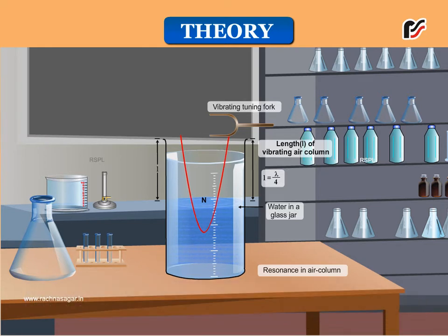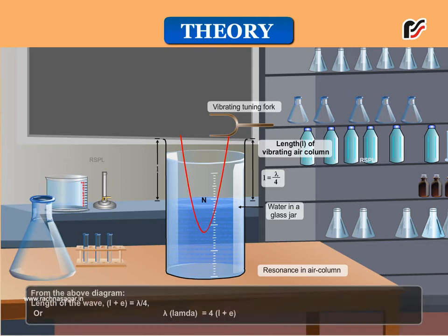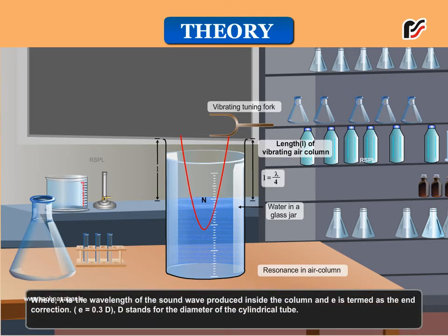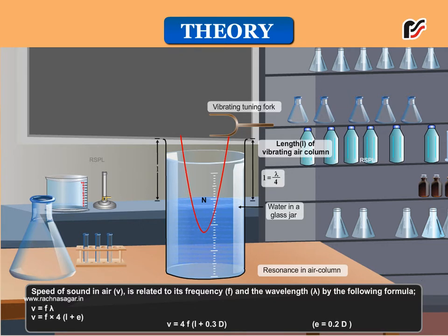From the above diagram, the length of the wave: L plus E equals Lambda divided by 4, or Lambda equals 4 times (L plus E), where Lambda is the wavelength of the sound wave produced inside the column and E is the end correction, where E equals 0.3D, and D is the diameter of the cylindrical tube. Speed of sound in air equals frequency times Lambda, which equals frequency times 4 times (L plus E), giving: speed of sound in air equals 4F times (L plus 0.3D).